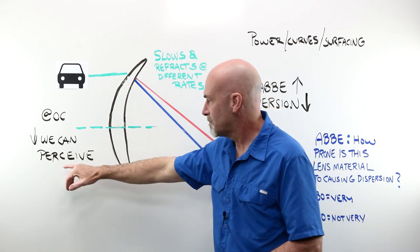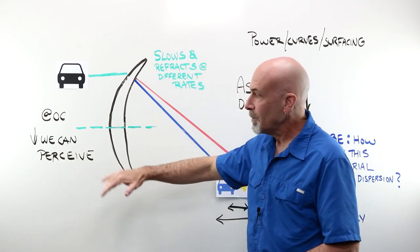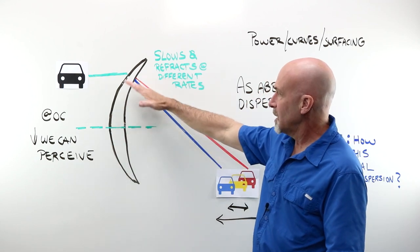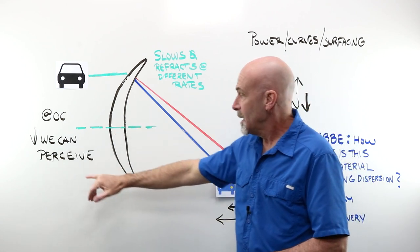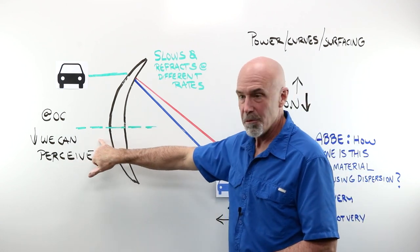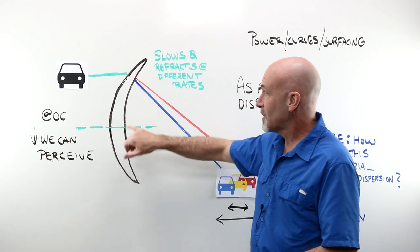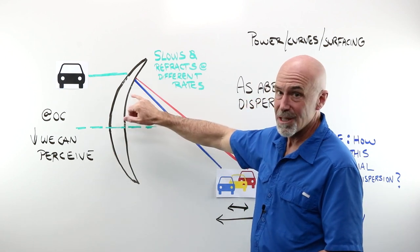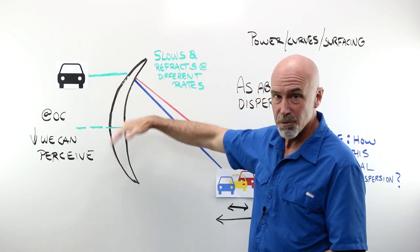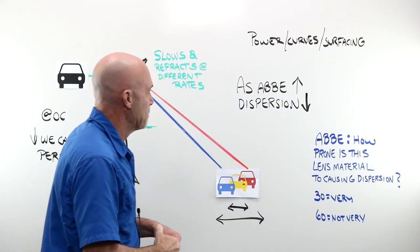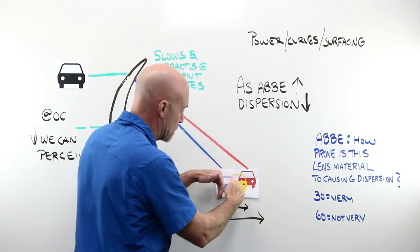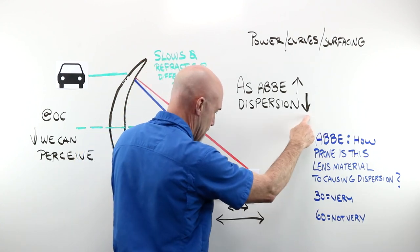When it leaves the lens again, it's going to whiz along in space until it hits something, hopefully the back of your eye. The red wavelength is going to end up in a different place. It went through here faster, it's traveled further than the yellow or the blue. Now at the OC of a lens this is happening, but it is at such a rate that we could never perceive it. It's almost imperceptible. As you leave the OC and get into the periphery of your lens, it increases.